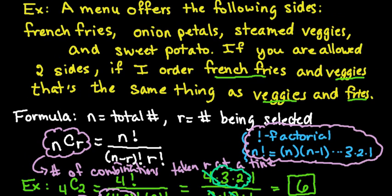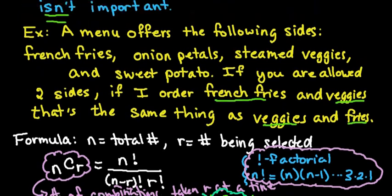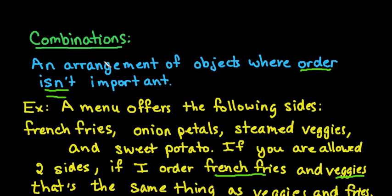So there are six different combinations of ordering two things out of these four choices up here. So remember, if order is not important, use the combinations formula. If order is important, then check out the permutations video that I have and watch how to find permutations.